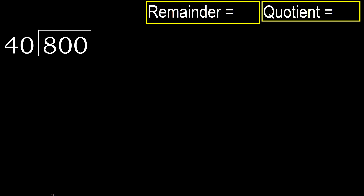800 divided by 40. 8 is less, therefore next. 80 is not less, therefore we work with 80. 40 multiplied by which number is nearest to 80, but not greater.